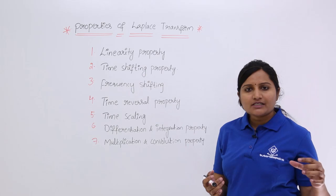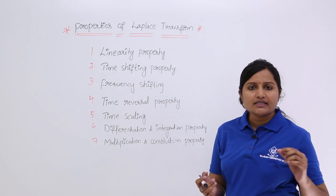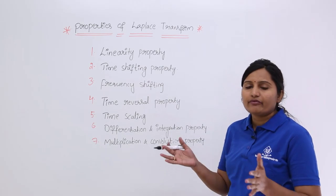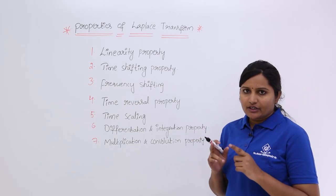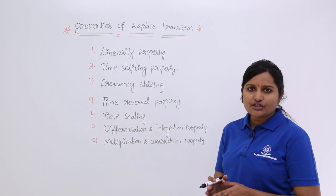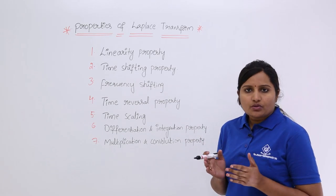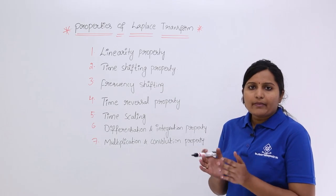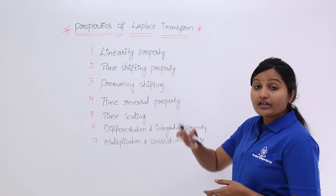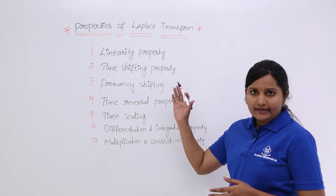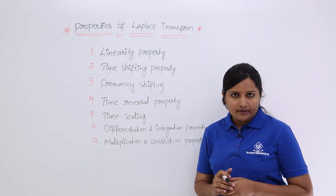For the individual transforms, we consider the transform of the first signal and the transform of the second signal, and we add the two transforms. So that individual addition of transforms is equivalent to the combined transform. We are going to show and prove this in the linearity property.